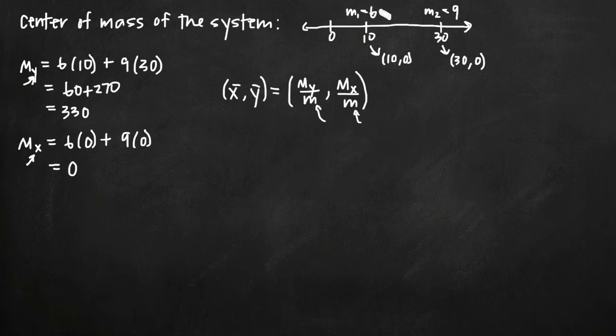And in our case, we have m sub 1 equals 6 and m sub 2 equals 9. So all we need to do is add those together and we get 15. So 15 is the total mass of our system.